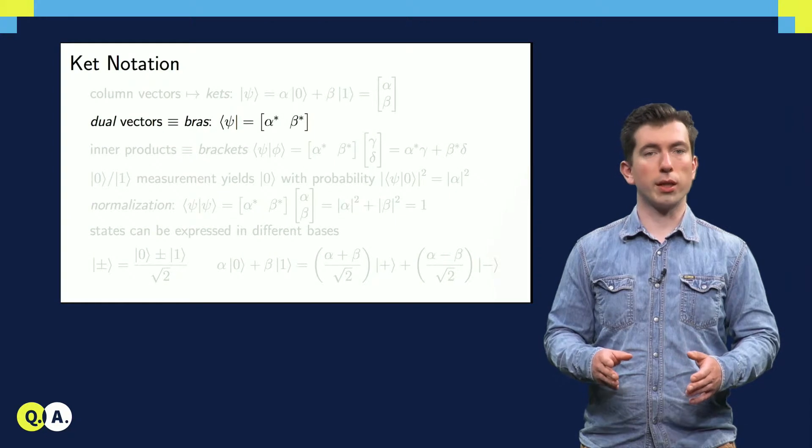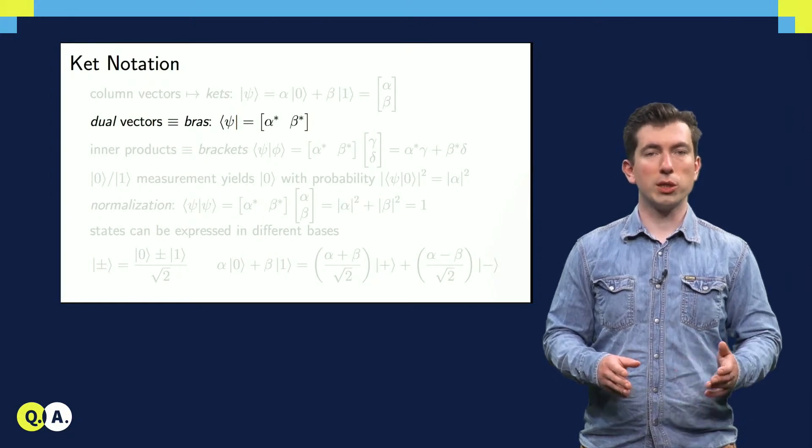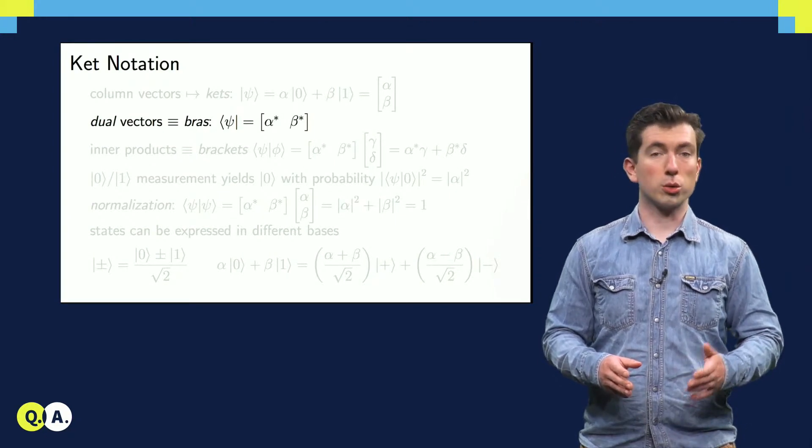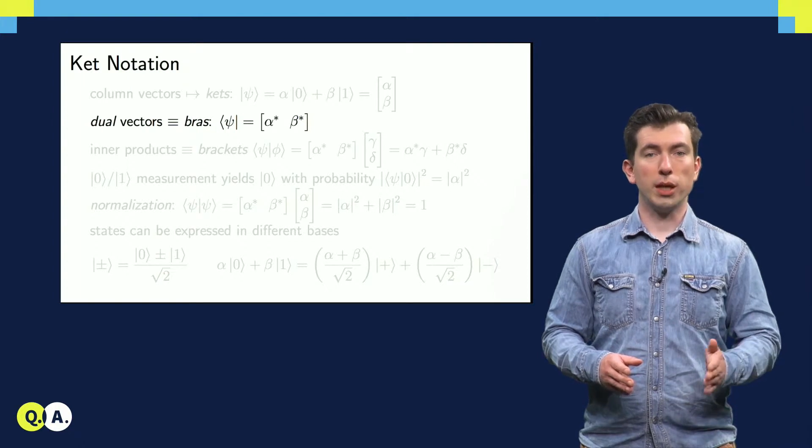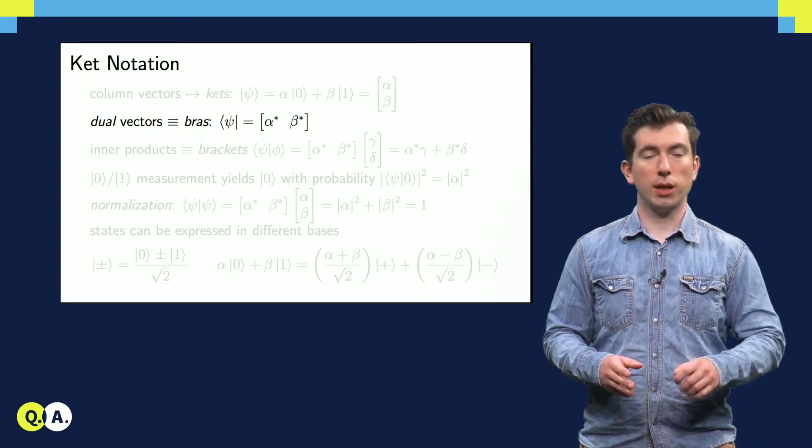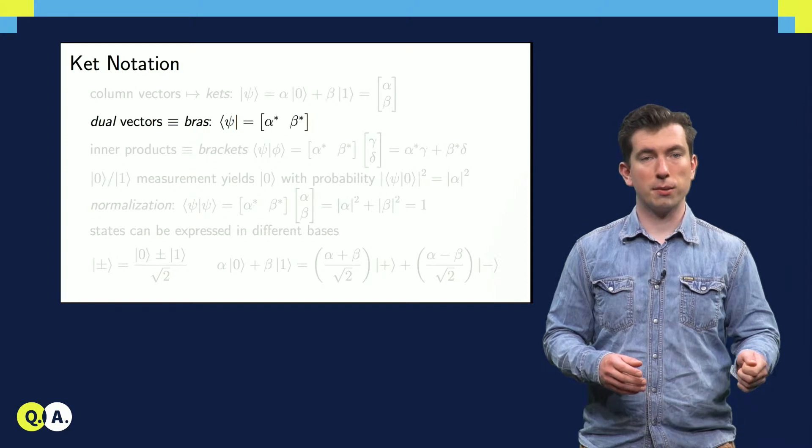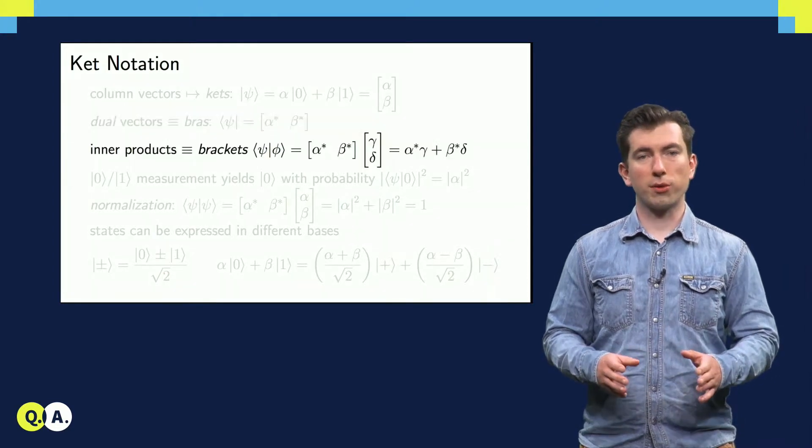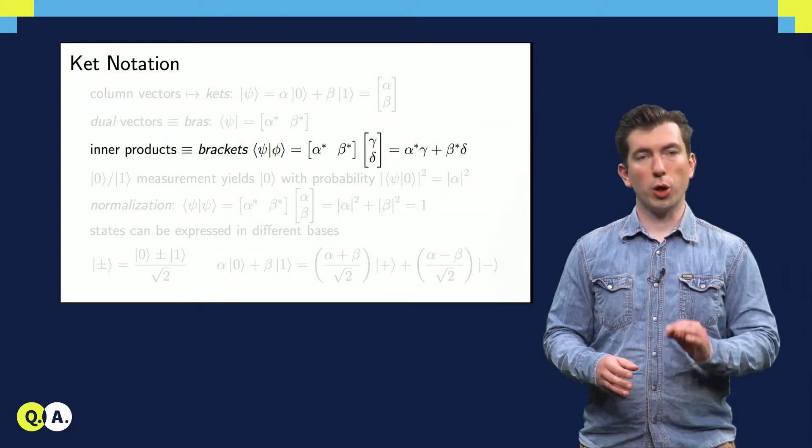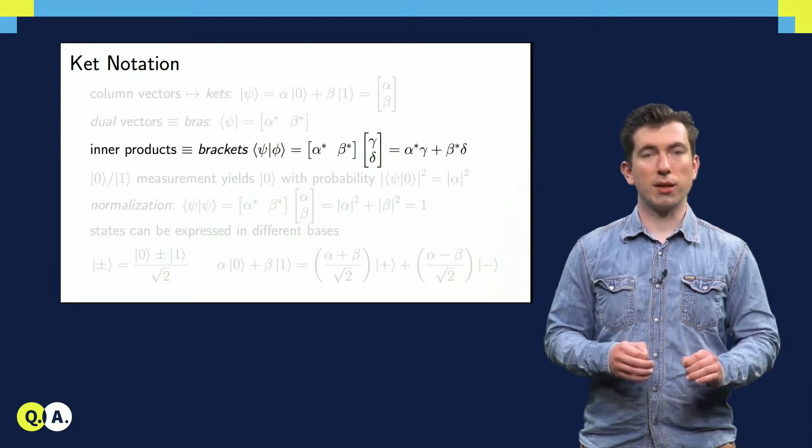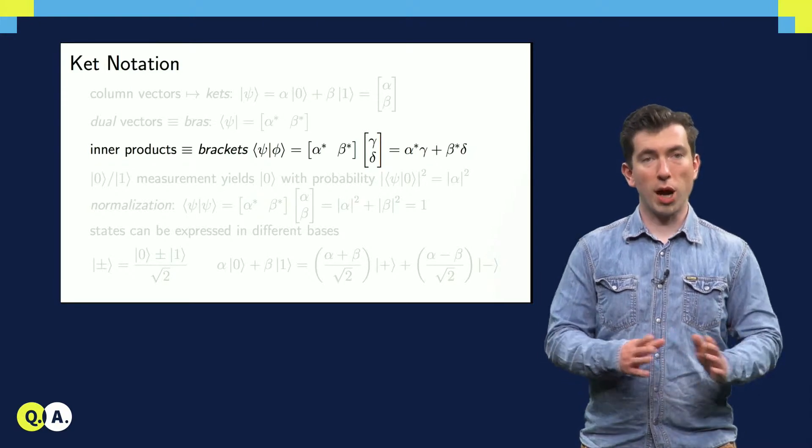In a departure from regular linear algebra, there is a well-defined dual vector for each quantum state called a bra, which we can obtain by taking the complex conjugate and the transpose of the ket vector. This is important for calculating inner products, which we always do by multiplying the bra for one state by the ket of the other, forming a bra-ket.